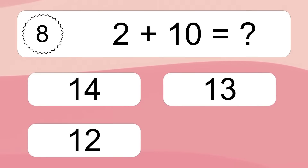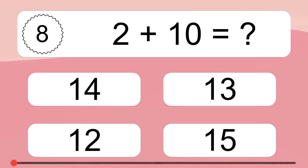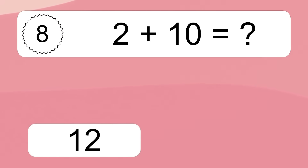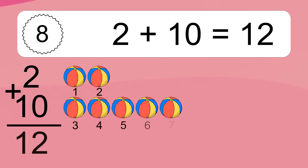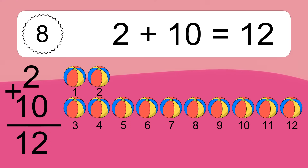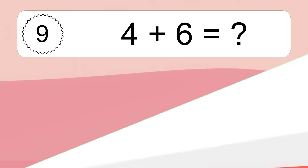2 plus 10 equals what? 2 plus 10 equals 12. Let's count it: 1, 2, 3, 4, 5, 6, 7, 8, 9, 10, 11, 12, 14.